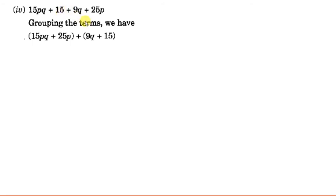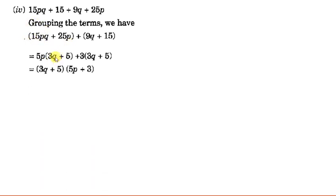Next: 15pq + 15 + 9q + 25p. Here we rearrange, grouping the 1st and 4th terms together and the 2nd and 3rd terms together. From the 1st and 4th terms, 5 is a factor of both 15 and 25, and p is common, so taking 5p common: 15 divided by 5 gives 3 with Q remaining, and 25 divided by 5 gives 5, so we get 5p(3q + 5).